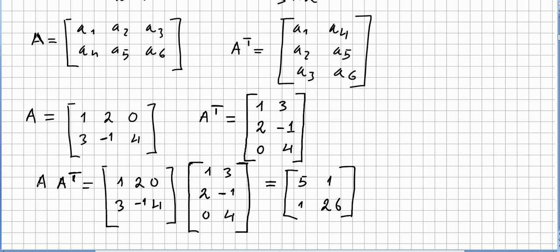So the product of A times A transpose will be 1, 2, 0, 3, minus 1, 4, times 1, 3, 2, minus 1, 0, 4. So this multiplication is always possible because here you have a 2 by 3 and here you have a 3 by 2.